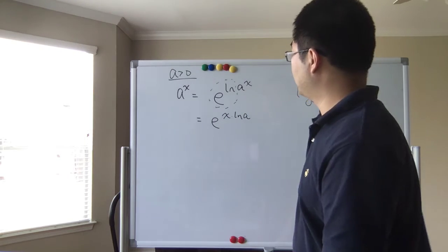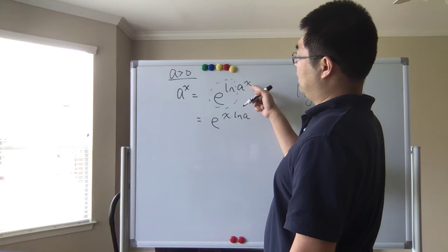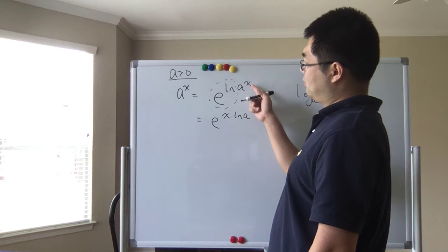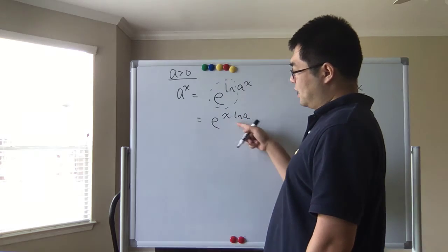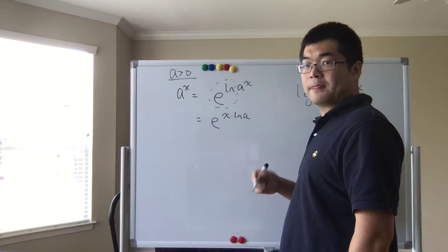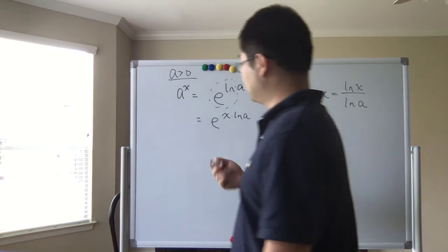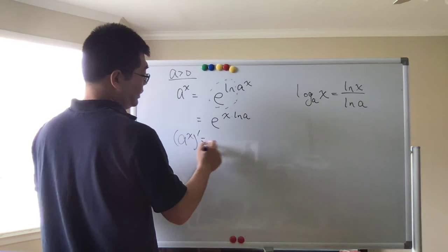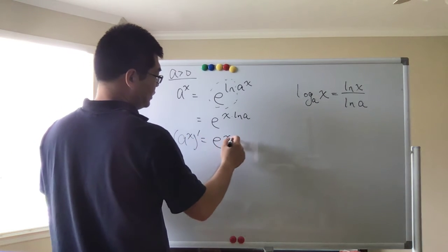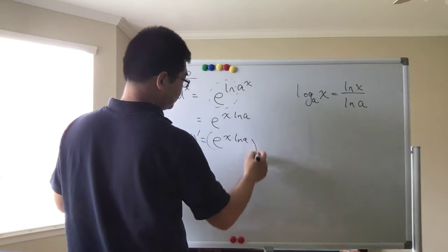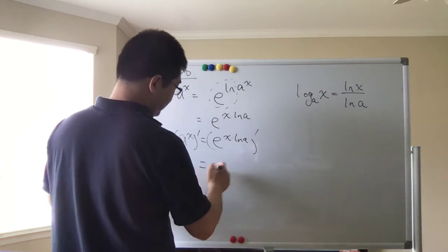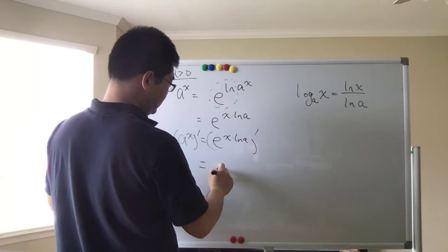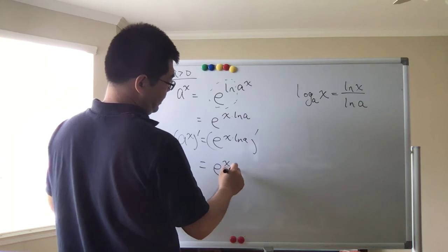Meanwhile, ln(a) to the power of x — based on the properties of logarithms — we can bring the exponent x in front of the natural log. So taking the derivative of a to the power of x is equivalent to taking the derivative of e to the power of x times ln(a).